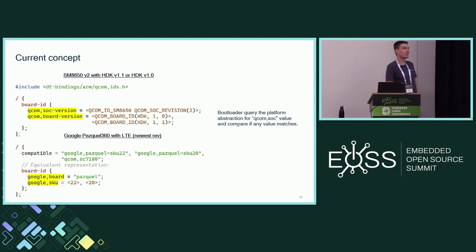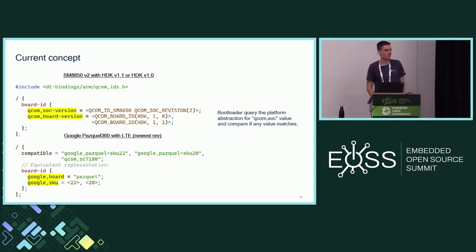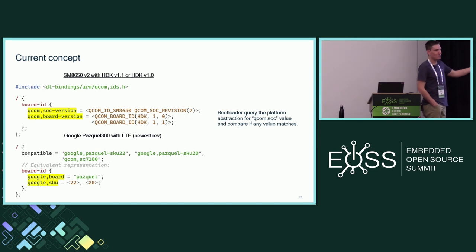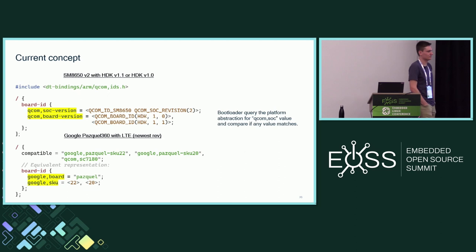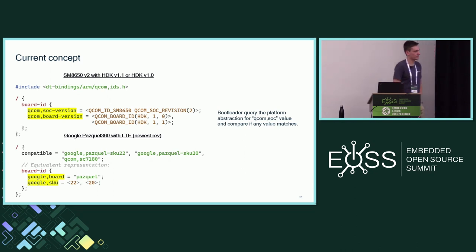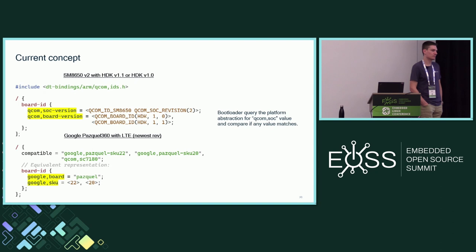[Elliot]: Compatible strings should maybe be a description to the software of what hardware you're on. When you describe being on SKU-22 and SKU-20, what if you need a workaround for only SKU-22 — then the kernel splits it into two device trees. If user space wants to know what SKU it's on, it can't use that compatible string. Right now we export the actual SKU in some other property in the device tree.